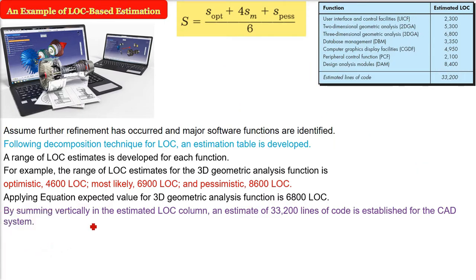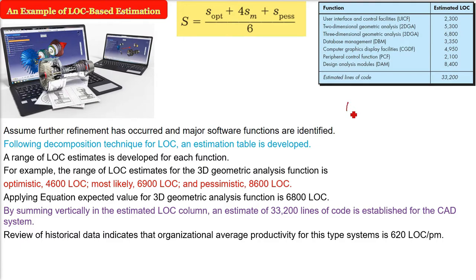When we review the historical data, that organizational average productivity of this type of CAD system, computer-aided design system, we found that the result is 620 LOC per month. In a month, a person-month, PM is person-month - in a person-month, one guy in one month will write 620 codes.